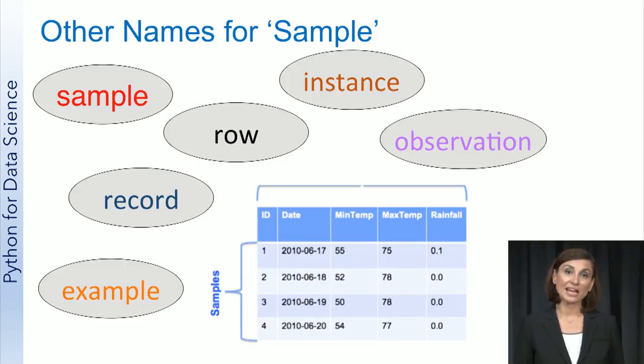In fact, there are many names for samples and variables, some of which we've already used in previous weeks. Some other terms for sample that you might hear in the machine learning context are record, example, row, instance, and observation, among many others. It is good to know that all of these terms mean the same thing in the machine learning context. That is, they all refer to a specific example of an entity in your data set.